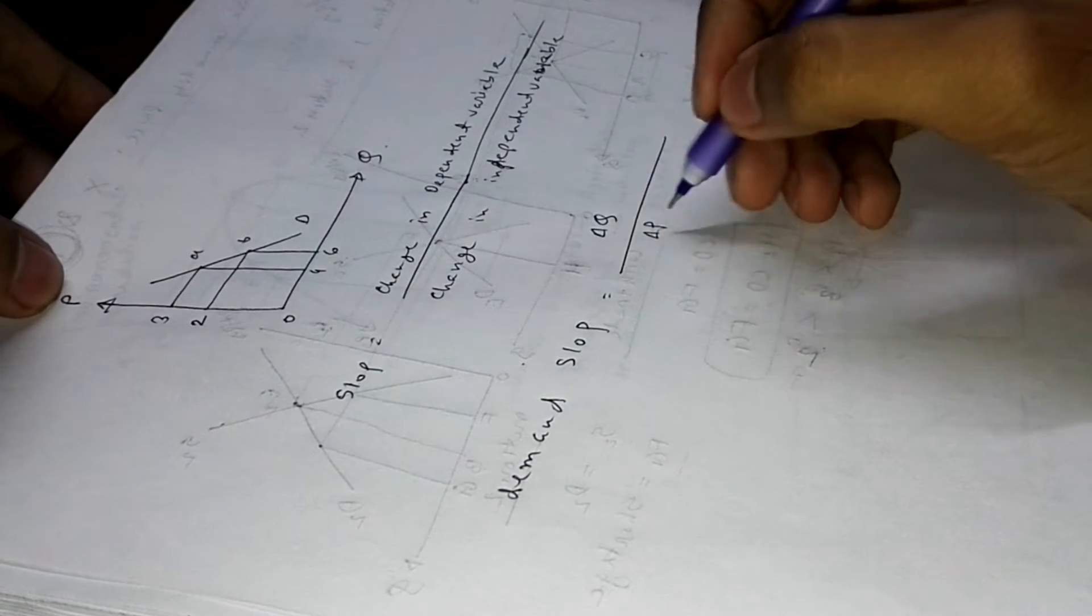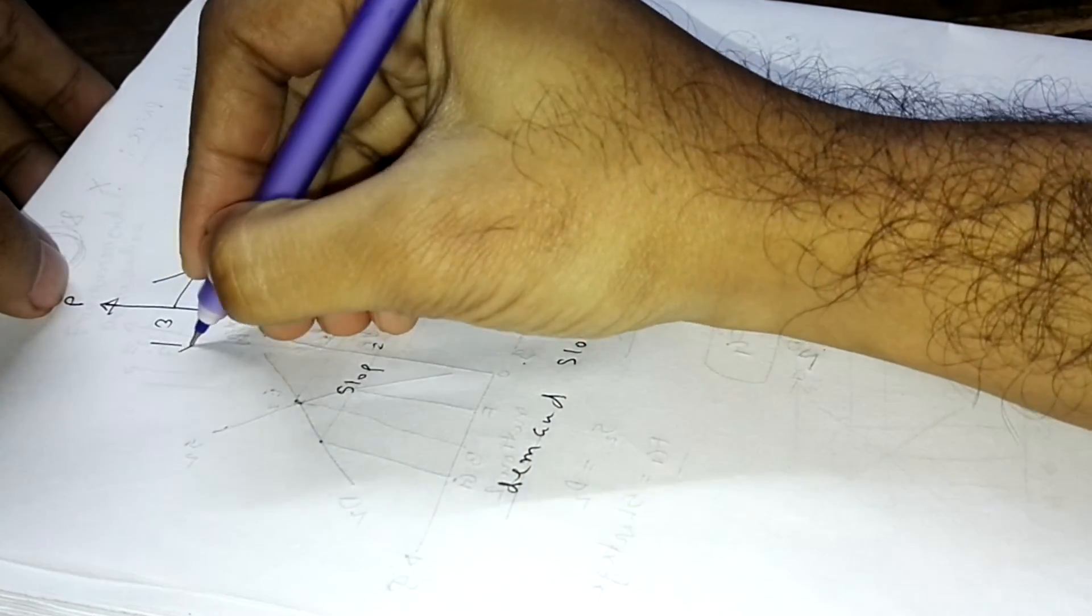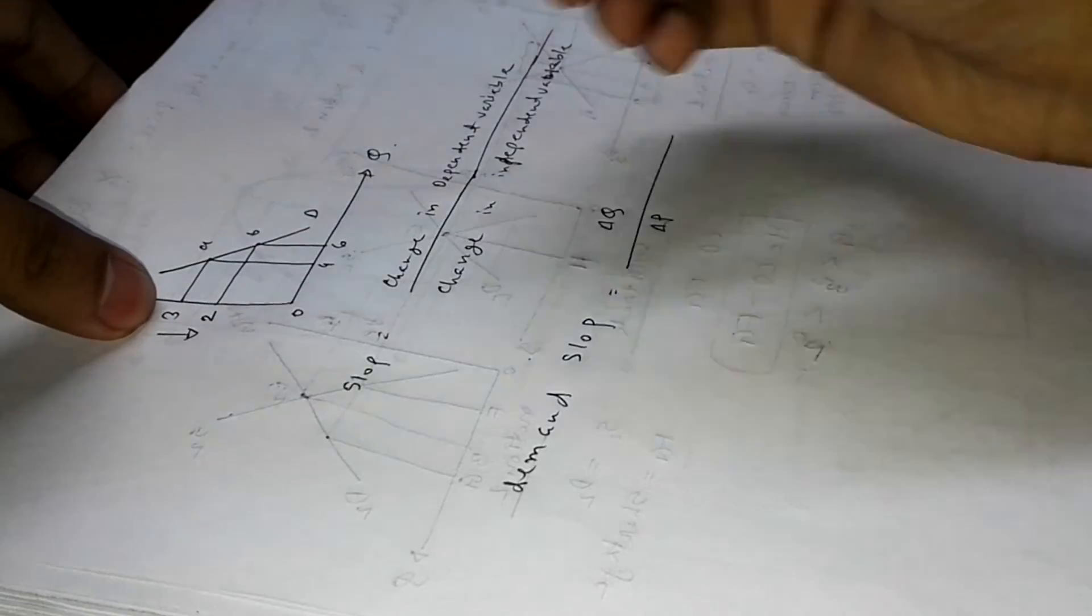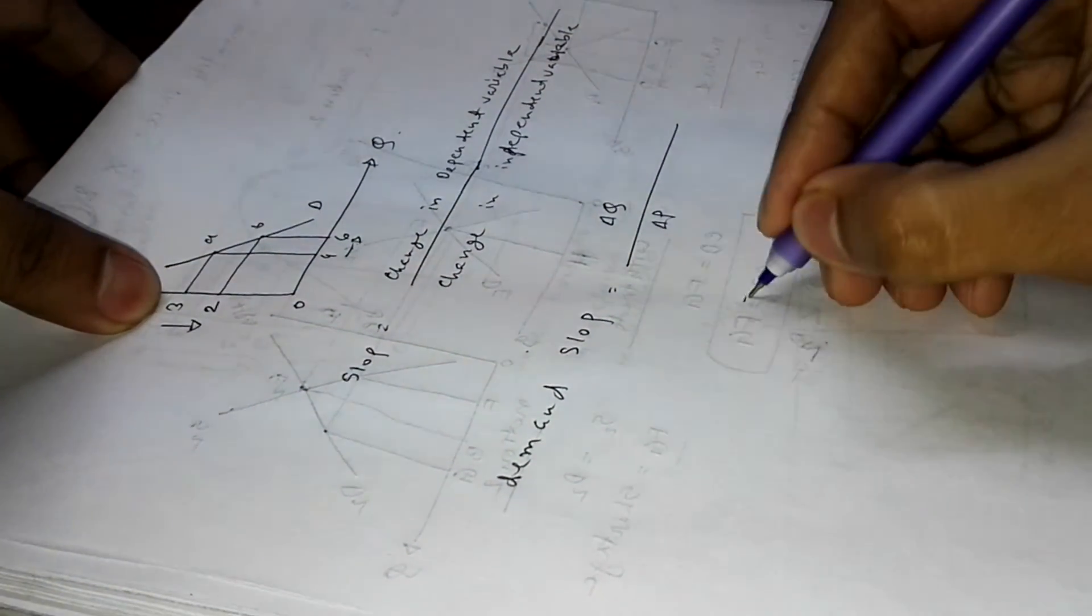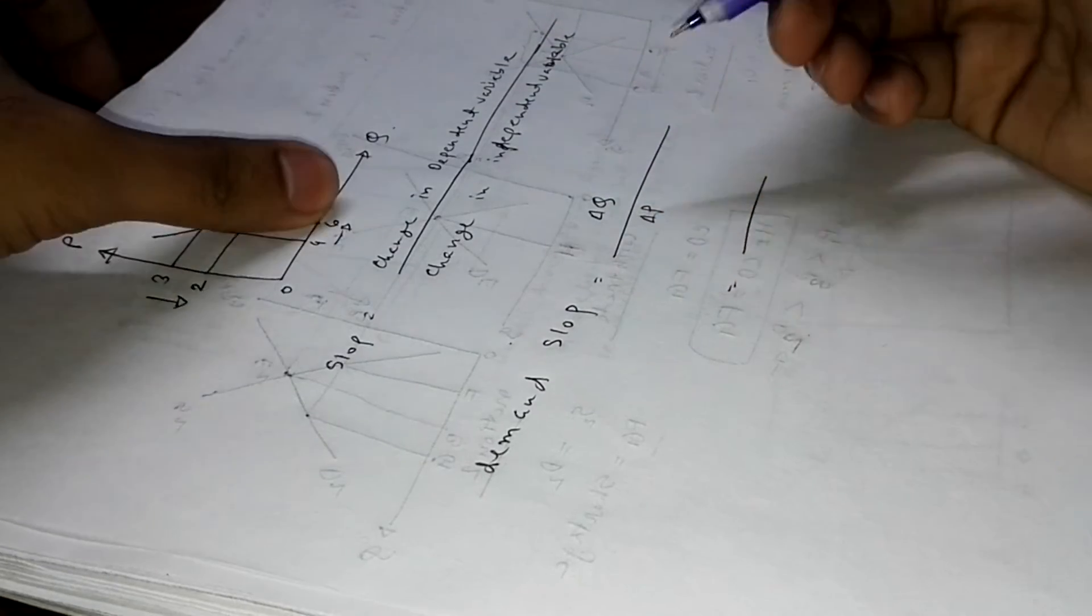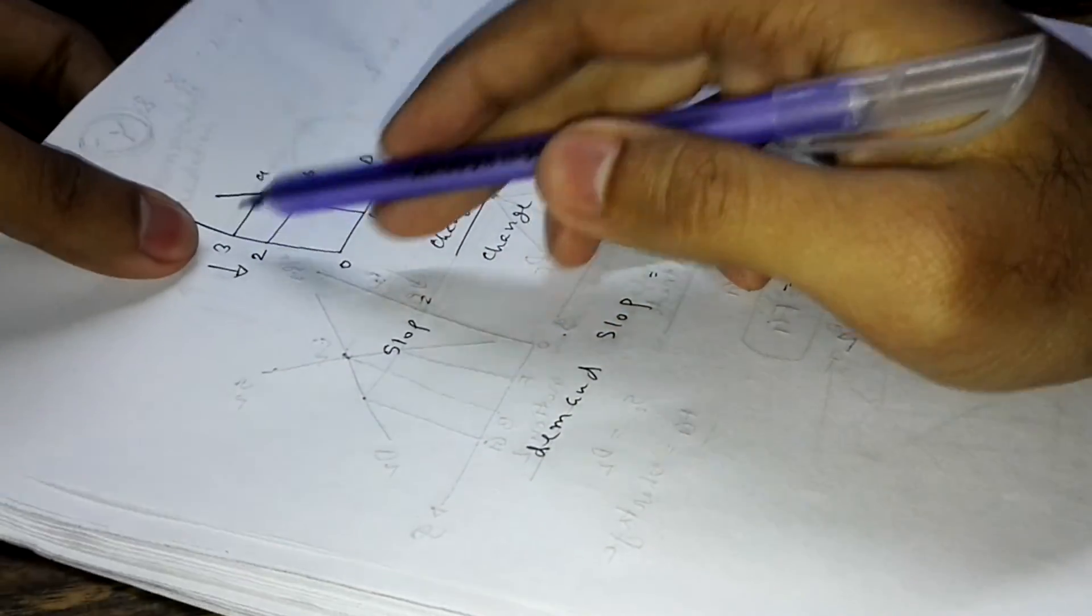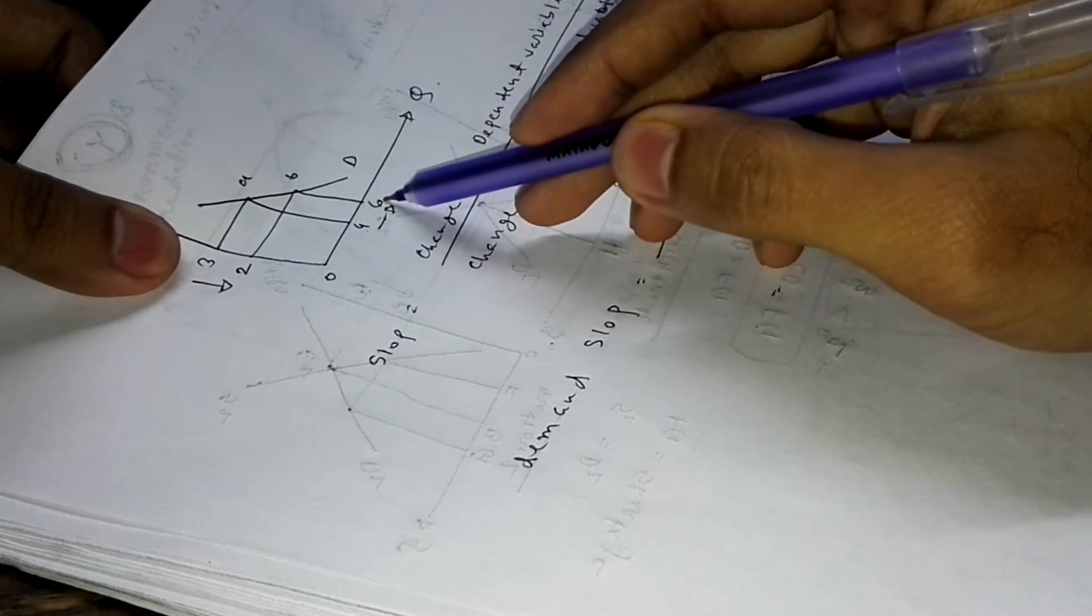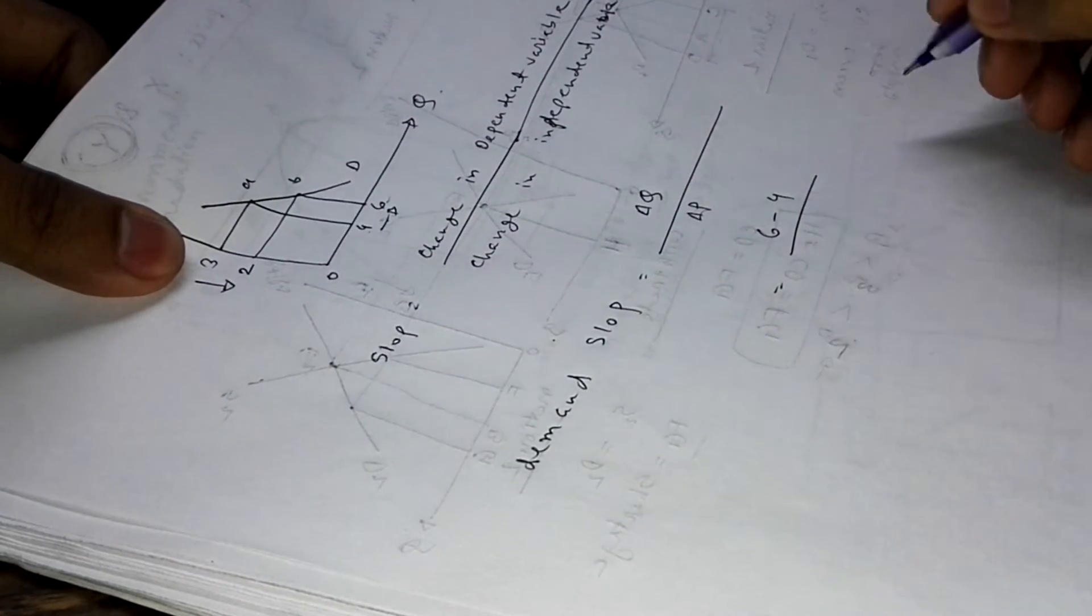So let us assume that price fell from 3 to 2 and quantity demand rose from 4 to 6. So let's count it. The point came from 4 to 6, so 6 is the second point. 6 minus 4.